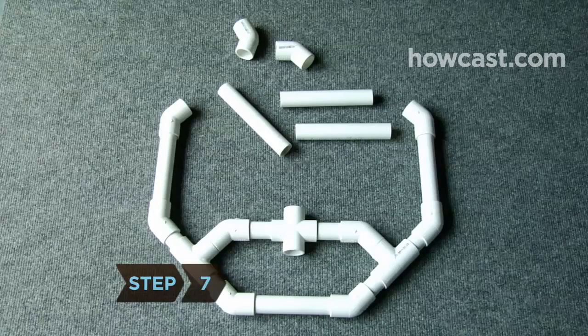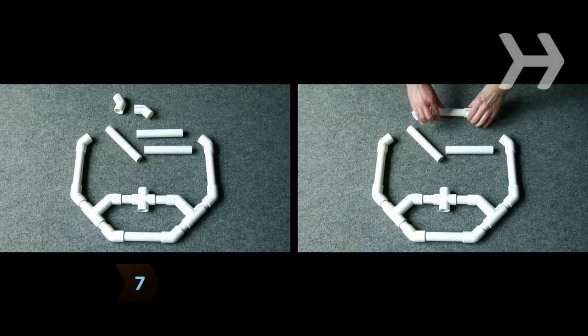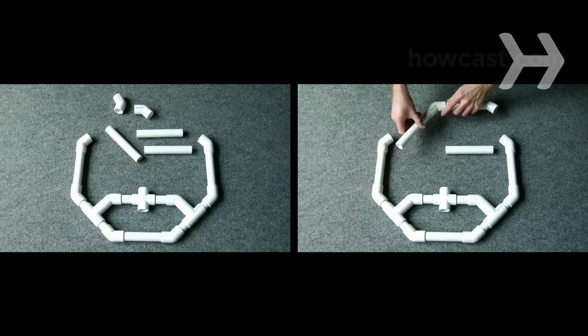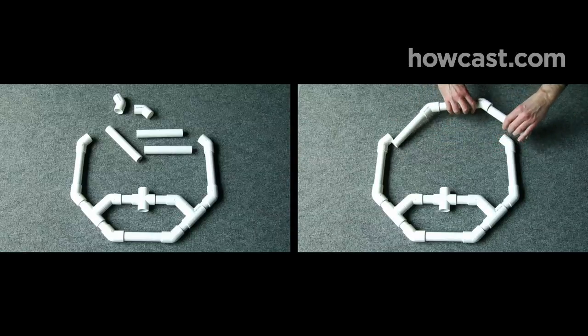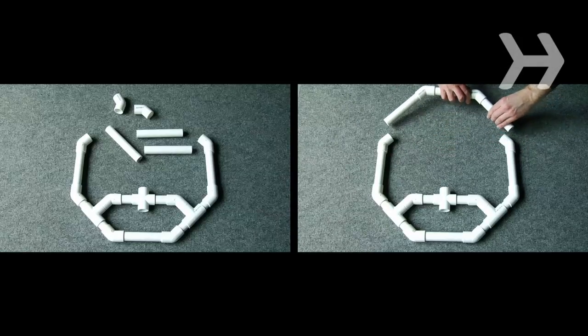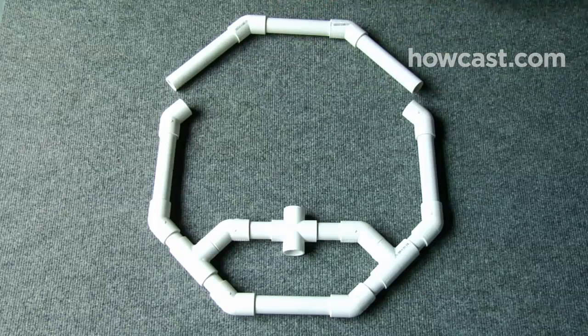Step 7. Now build the top of the stabilizer. Attach a pair of elbow connectors to either end of a 6-inch PVC pipe. Then, attach the two remaining unused 6-inch pieces to the other ends of the elbow connectors.